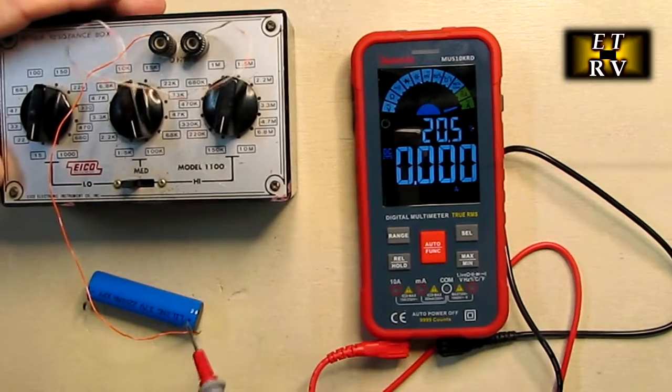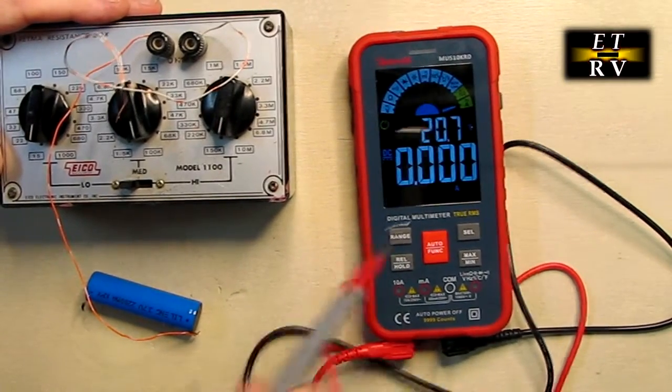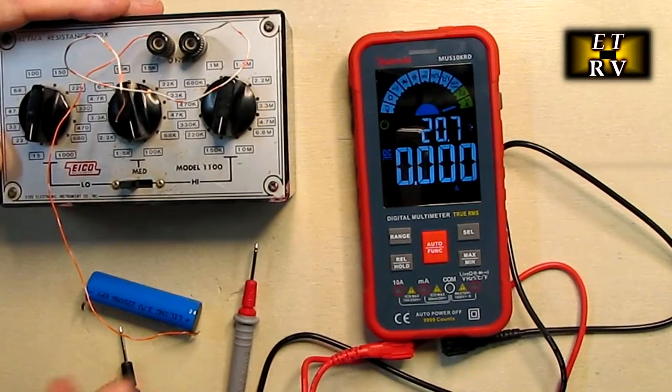So it's accurately telling me the current that's going from that battery through this resistance box and through the meter, letting me know the actual DC current.